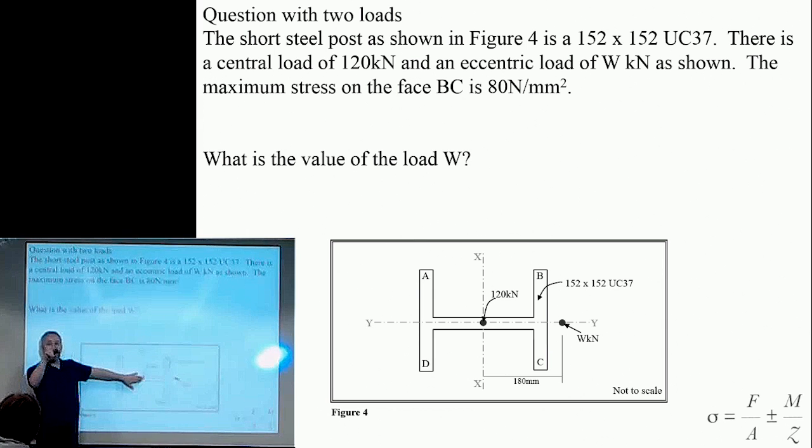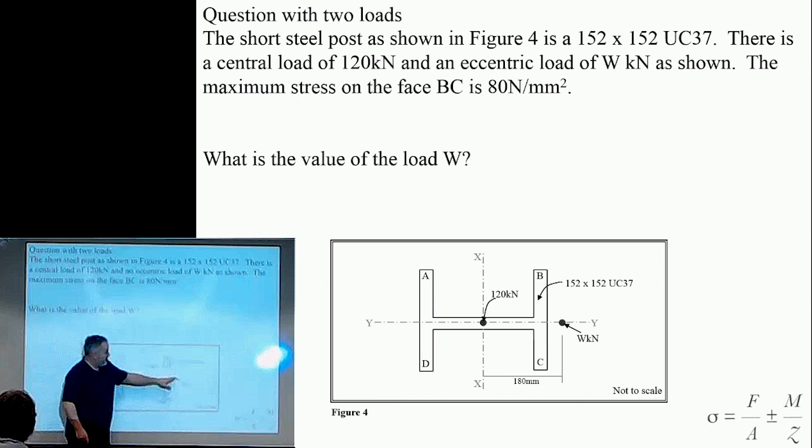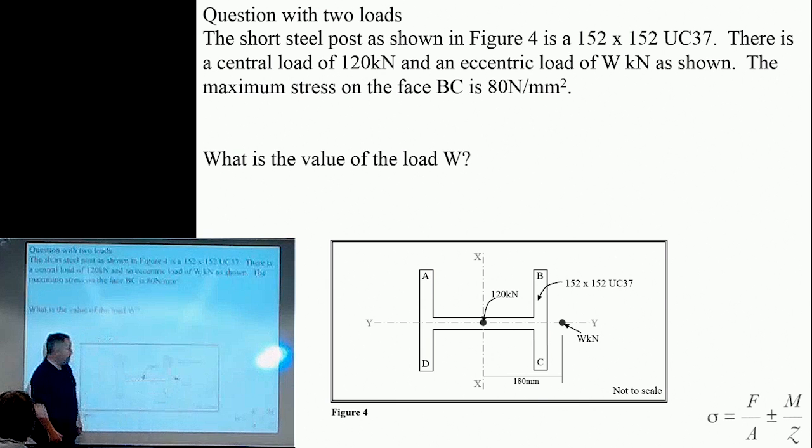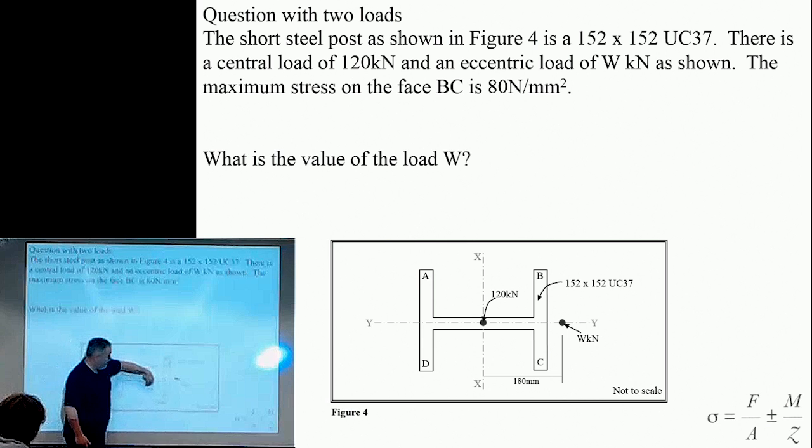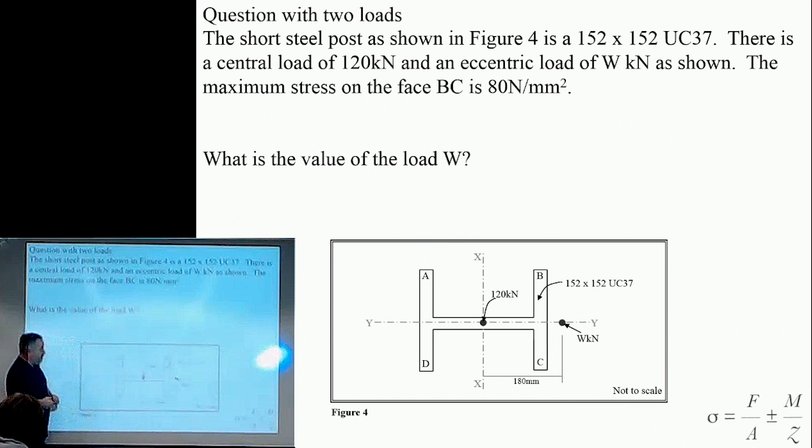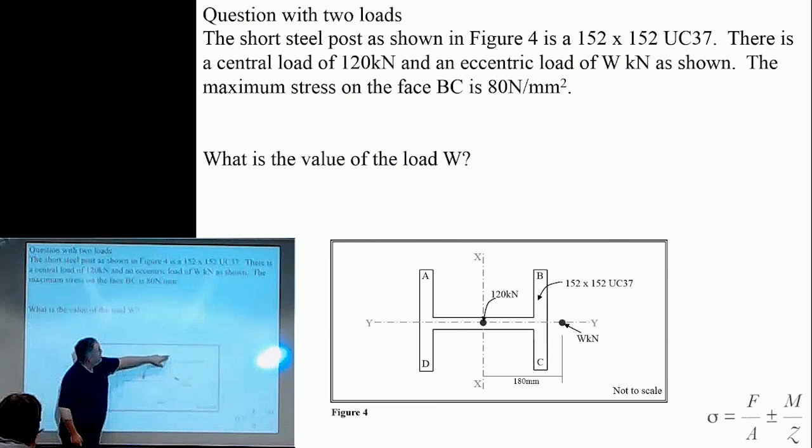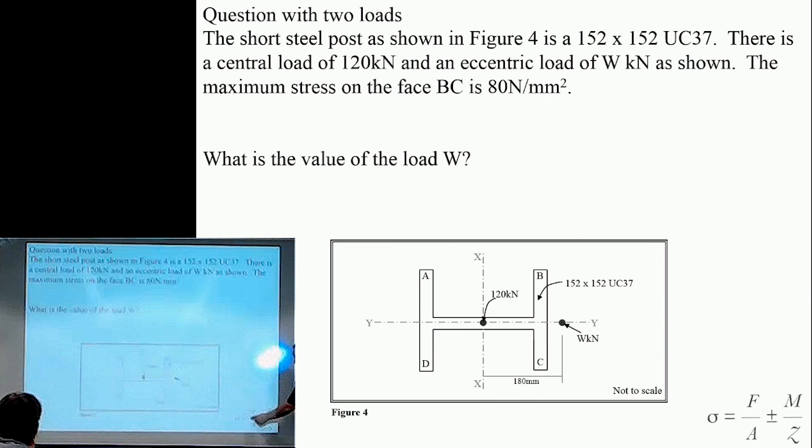In terms of our M over Z, you've got 120 times by distance zero, so you don't have to add the M over Z for this one. However, we've got this awkward load here called W kilonewtons. We're told that W is 180mm from the center. The question is, if the maximum stress on BC is 80 N/mm², then in terms of our formula, we have stress equals 80, and then we have to put these two forces into our formula.